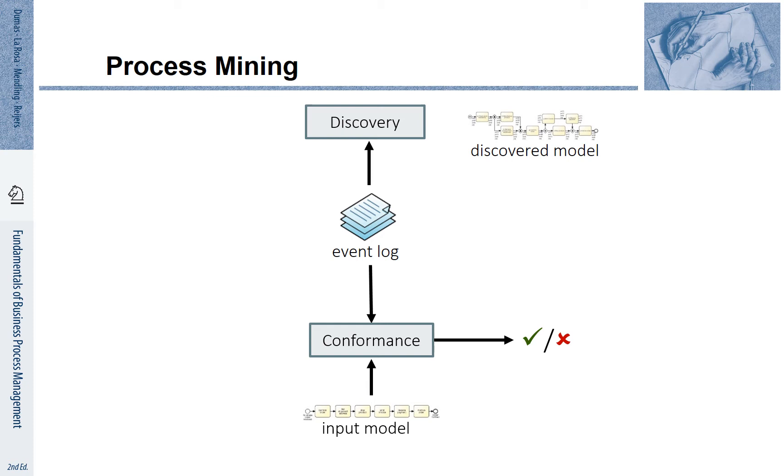The ambition of conformance checking is to understand to which degree this input process model is in line with the behavior captured by the event log. Conformance checking tells us a degree of how much they are in line and also points us to particular cases that are not compliant with this input model.